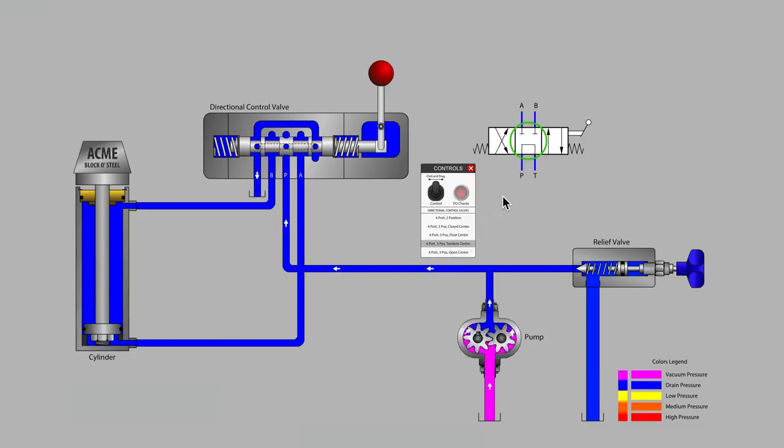In this example, we would say P to T connected while A and B work ports blocked.